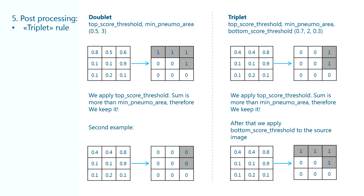Let's look at the example. In both cases we apply top score threshold first and then check if the sum is more than min pneumothorax area. In the first case it is, so we keep it. In the second example the sum is less than min pneumothorax area and we drop it.